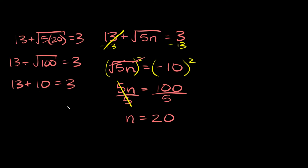So that means our solution n is equal to 20 doesn't work. And when one of your solutions doesn't work, that's called an extraneous solution — it's basically just a solution that doesn't work. So that means the original equation has no solutions.